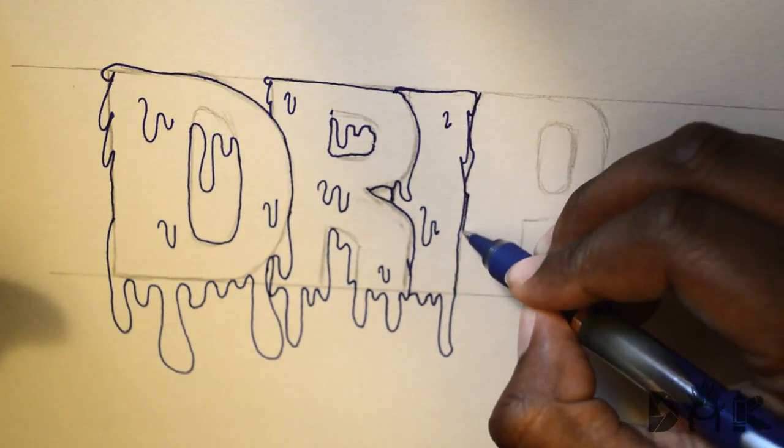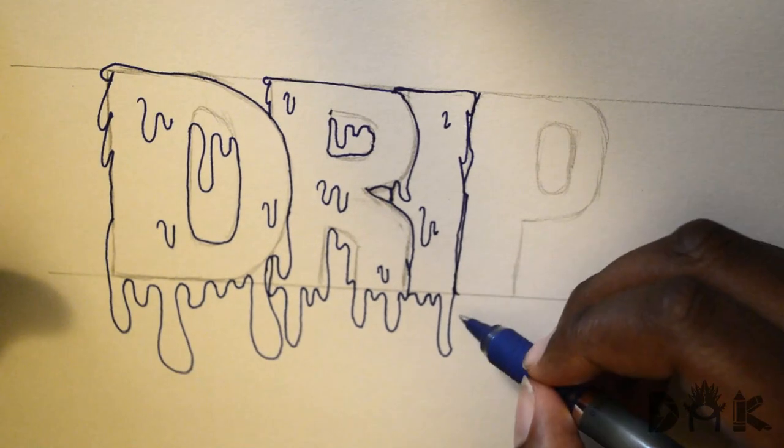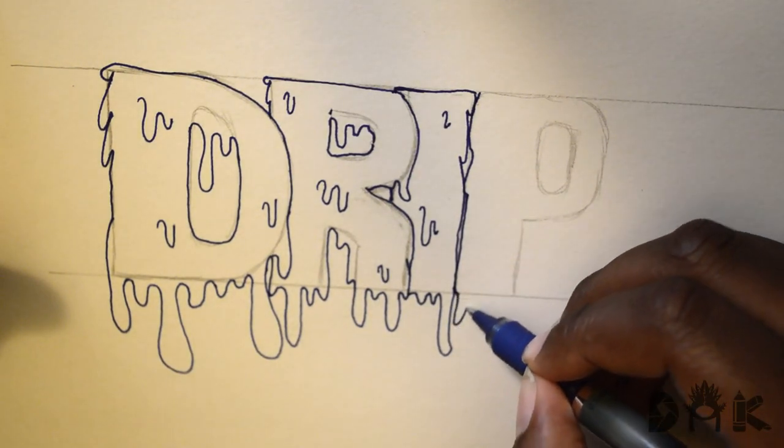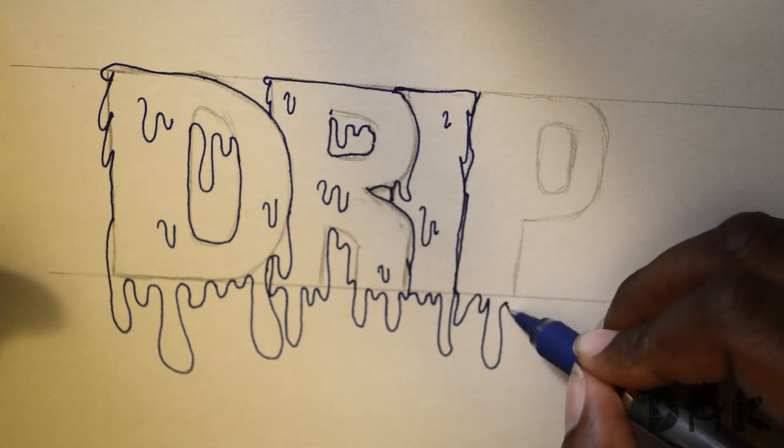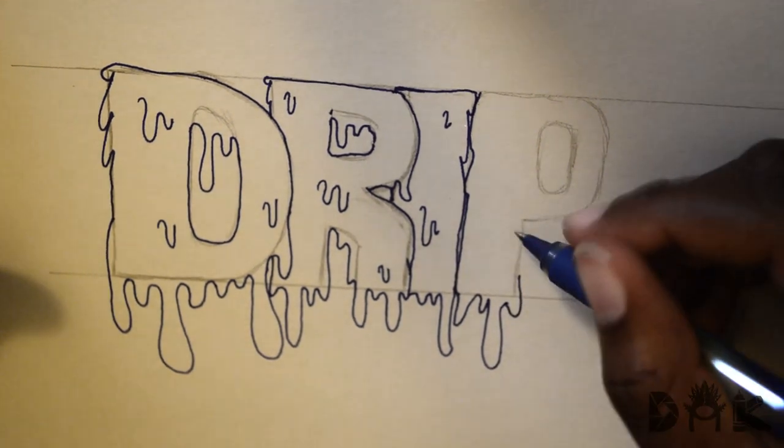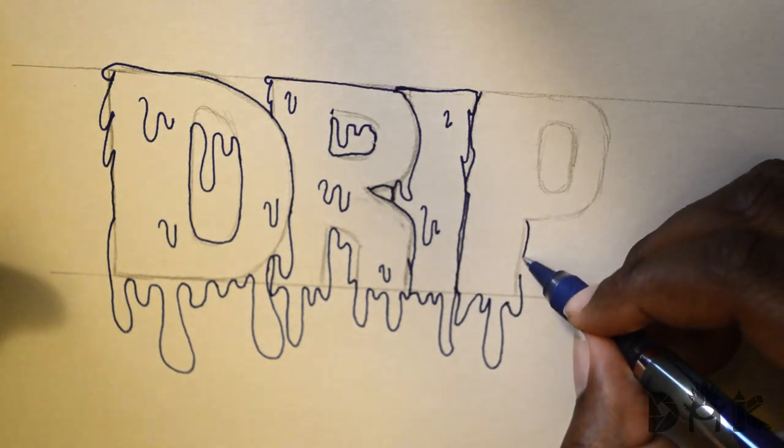A little bit on the R, kind of overlapping, but you still want to signify that the P is a P and has its own base so it's dripping on that as well. Add a drop effect at the bottom, add it at the bottom of the hook of the P as well.